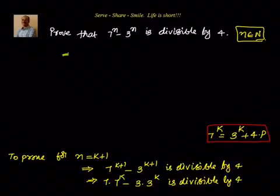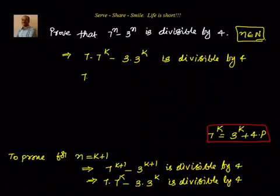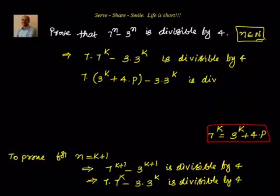So, we have to prove 7 into 7 power k minus 3 into 3 power k is divisible by 4. We know 7 to the power of k equal to 3 power k plus 4 into p, so substituting that, this expression is divisible by 4.